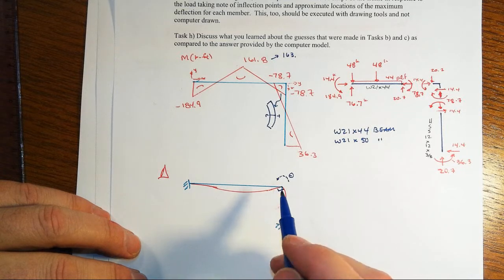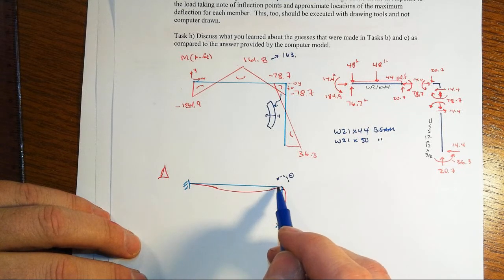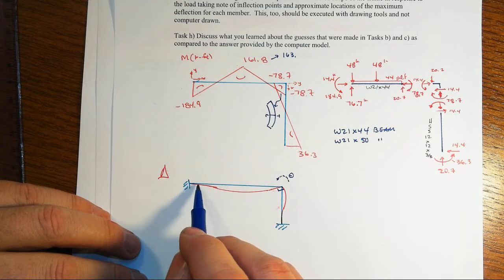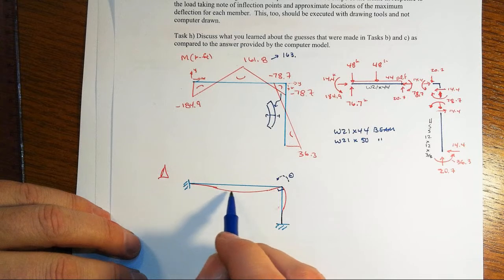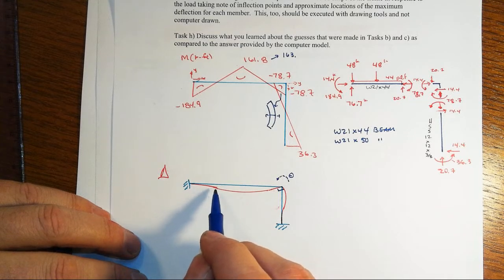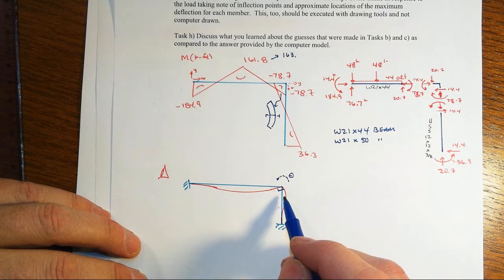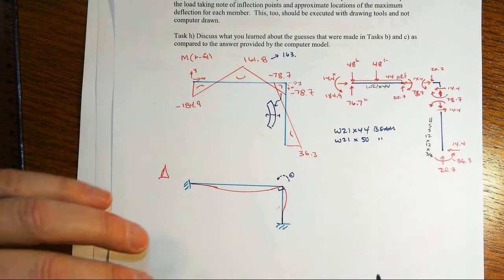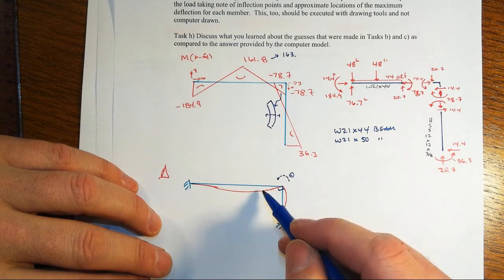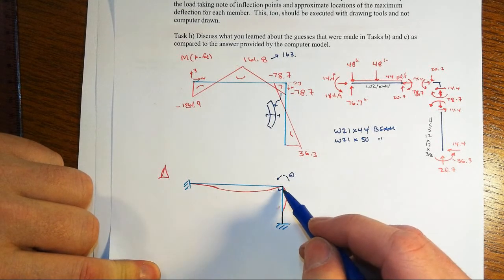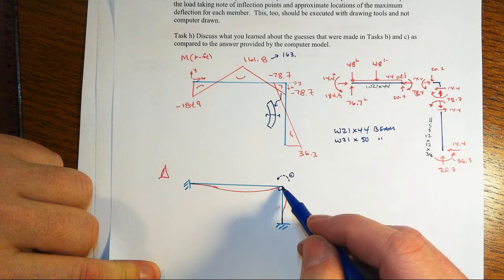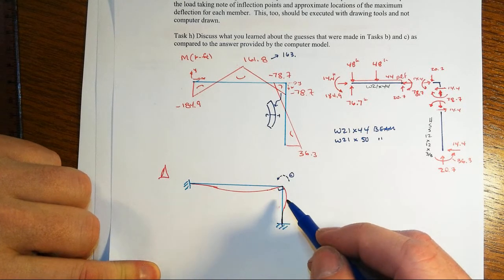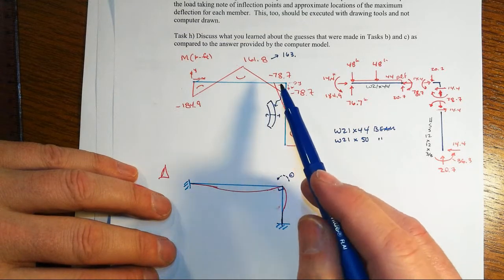We have to have a little bit of frowny face to the left of that joint, we need frowny face just to the right of the support and then we have smiley face in the middle, nice smooth transitions as best you can do with the French curve. And then for the column, even though the computer model will indicate that in this particular case the column is relatively stiff compared to the beam and it won't show you much in the way of deflections, we really do have some curvature and it's reverse curvature that shows up in that column.